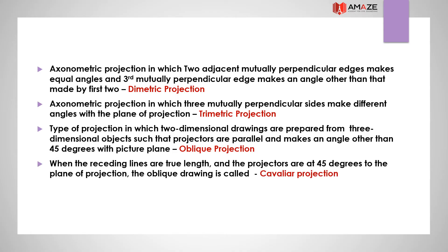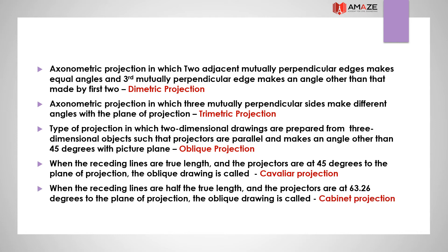When the receding lines are true length and the projectors are at 45 degrees to the plane of projection, the oblique drawing is called cavalier projection. When the receding lines are half the true length and the projectors are at an angle of 60.26 degrees to the plane of projection, the oblique drawing is called cabinet projection.